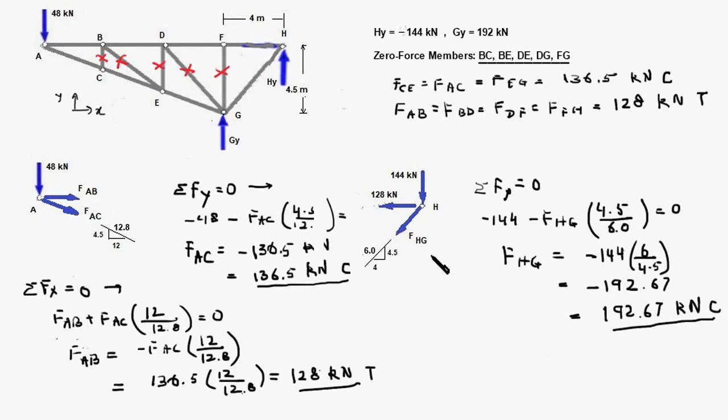So the member HG has a compressive force of 192.67, these members AC, CE, EG have compressive force of 136.5 kilonewtons and the members in the top row four of them have a tension force of 128 kilonewtons and these five members are zero force members. So that completes the force calculation of all the members of the truss and we are done.